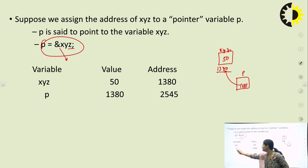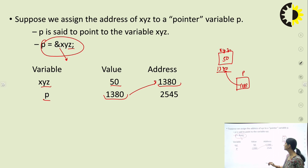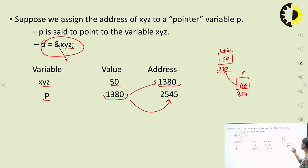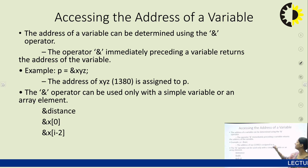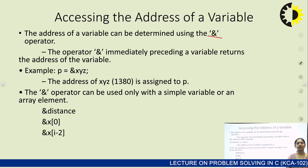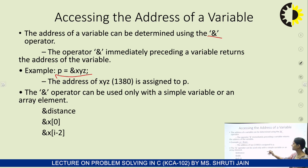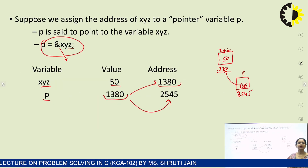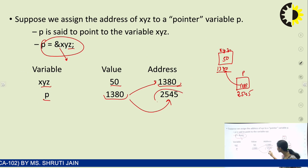Now, this variable p — if I talk about the variable xyz, it is storing the value at address 1380. This variable p is storing the address 1380, and it also will have its own address, which is 2545. To access the address of a variable, we have the ampersand sign or the address-of operator. This operator, immediately preceding a variable, returns the address of that variable. So if I say p equals address of xyz, the address 1380 will be stored into variable p, and the address of the variable p itself would be 2545.